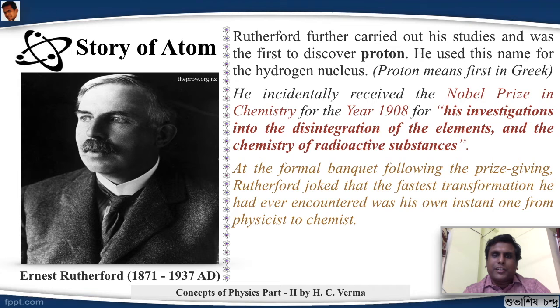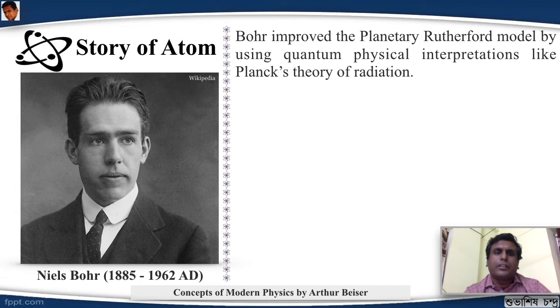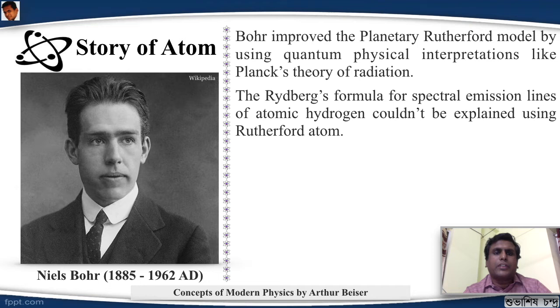Now we will shift to the theoretical aspects of the atom. The man who looked into it theoretically and gave a model was Niels Bohr. He was influenced by Ernest Rutherford, Albert Einstein, and Max Planck. So he improved the planetary Rutherford model by using quantum physical interpretations like Planck's theory of radiation. The Rydberg formula for spectral lines of atomic hydrogen couldn't be explained using Rutherford atom, as it showed different lines, whereas for the planetary model it should have shown only one single line.